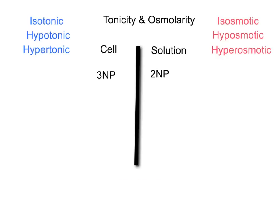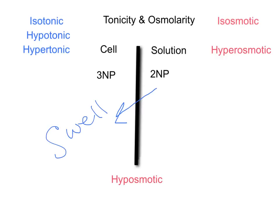In the second situation, the solution only has two non-penetrating particles, and therefore the solution is hypoosmotic — it has fewer solute particles than the cell. Looking at the movement of water, it is going to move from the solution into the cell, because there's a higher concentration of non-penetrating particles in the cell. So the cell is going to swell, which means the solution is hypotonic.